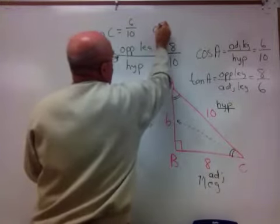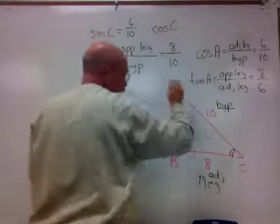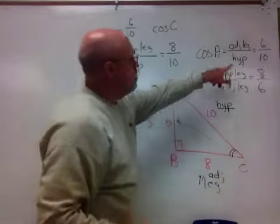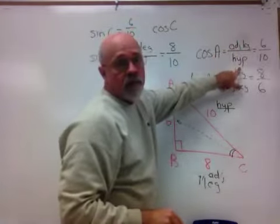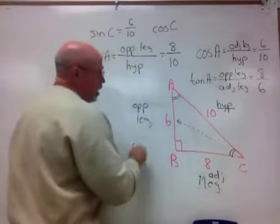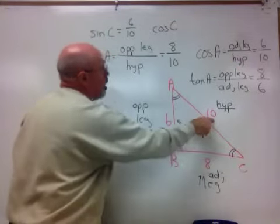The cosine of angle C. Well, cosine, again, same definition, it's adjacent over hypotenuse, but this time adjacent is the 8, hypotenuse is the 10.